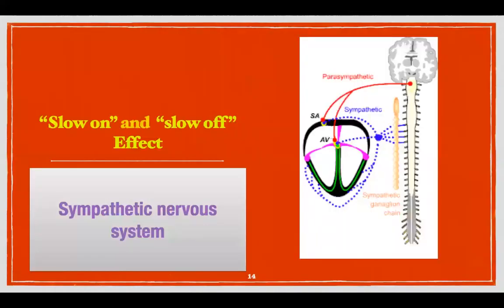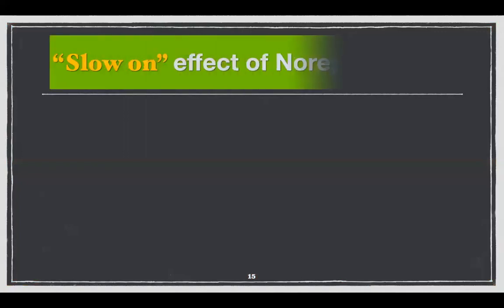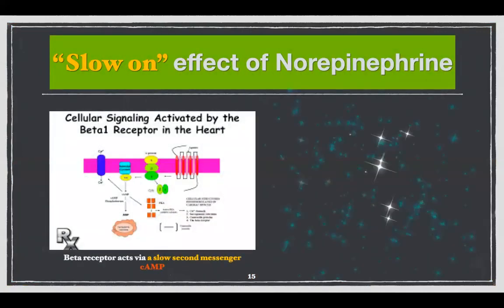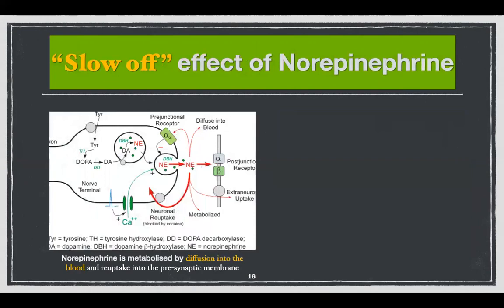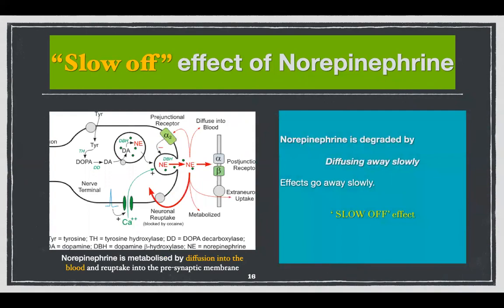The sympathetic effect is slow in onset — a slow on effect — and it is also slow to terminate, a slow off effect. Why is this so? The slow on effect of norepinephrine is mediated through the slow second messenger cyclic AMP. The beta-adrenergic receptor of the heart is G protein coupled and acts through cyclic AMP — this is the messenger that Sutherland first discovered to be a second messenger. This messenger is slow in onset, therefore the effect of norepinephrine begins very slowly, and it also lasts for a long time. It is a slow off effect because norepinephrine diffuses away slowly, so the effects dissipate slowly.